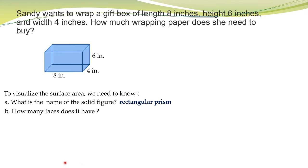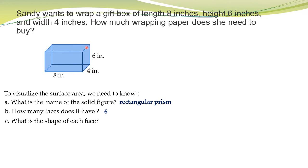Next, how many faces does it have? Counting the faces — meron dito sa galiwa at sa kanan, dalawa. Sa harap at sa likod, dalawa. Sa taas at baba ay dalawa. So lahat ay 6. We have 6 faces all in all, including the bases. Let us see what is the shape of each face. Wala namang pantay sa mga dimensions nito, so this is a rectangle — this is 4 by 6. Ang nasa ilalim naman is 8 by 4, another rectangle. Nasa likod ay 8 at saka 6, another rectangle. So lahat are rectangles.